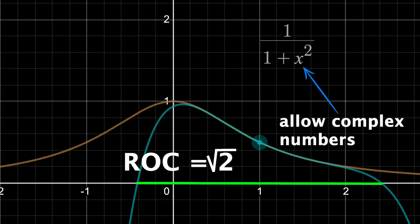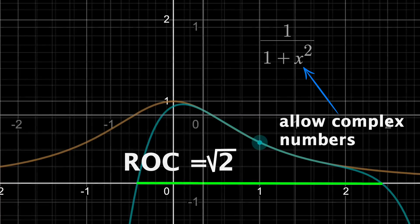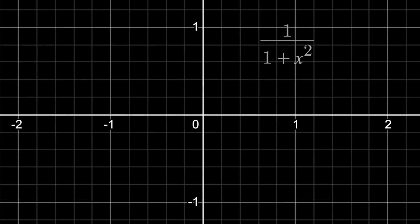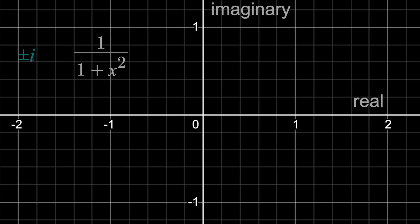So instead of the one-dimensional real number line, I need an entire plane for inputs, where the vertical axis is now the imaginary axis. Because if I plug in i or negative i to the equation, out comes 1 over 0. So those two inputs are the singularities.